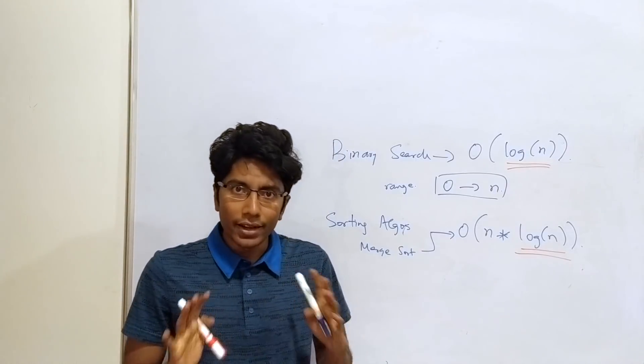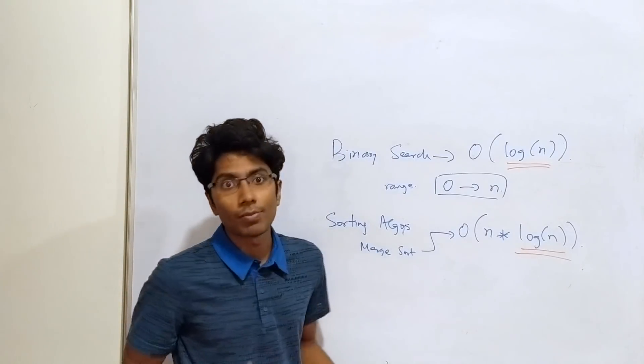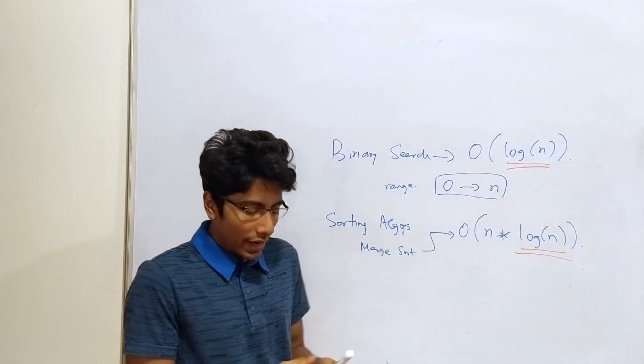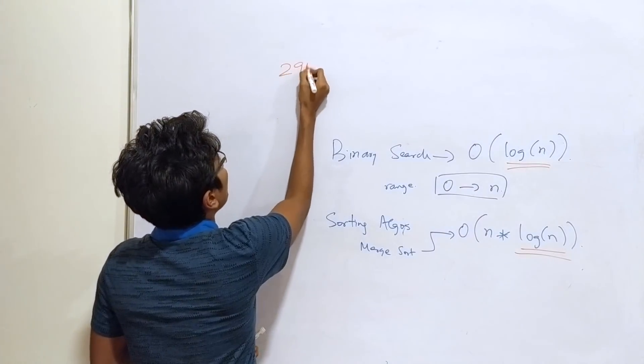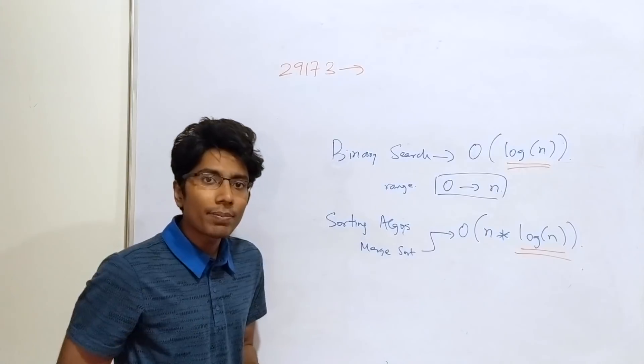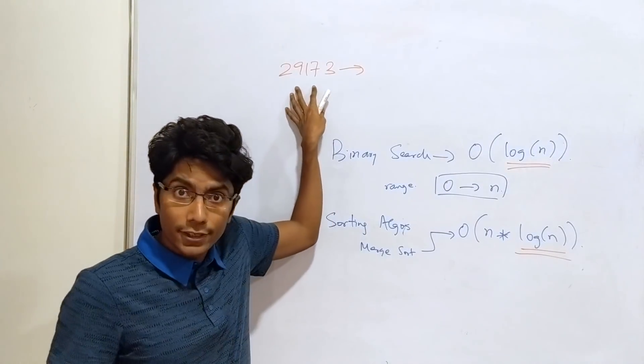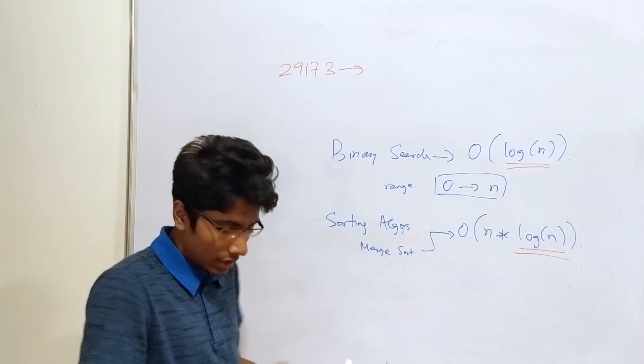Well, log n has an interesting property. In fact, some interesting things have log n as the property. So if I write down a number, let's say 29173, what I am doing is I am keeping some information in this number implicit. When I am talking to a human being, 29173 means something. But let us make that explicit.